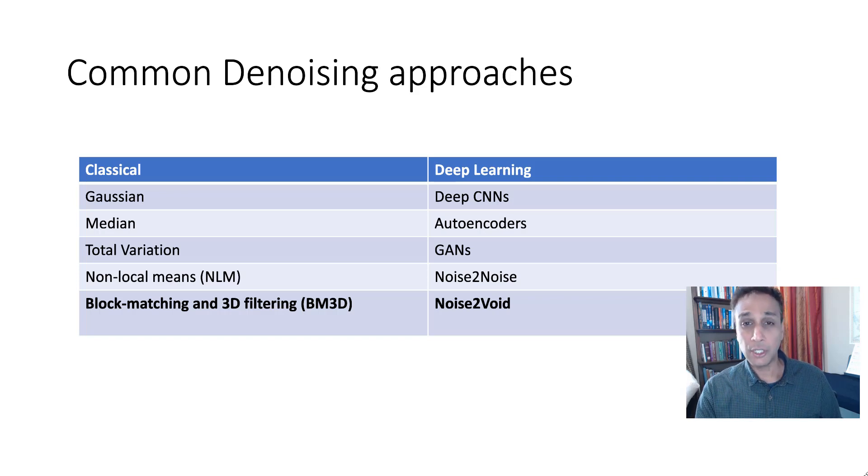And the common denoising approaches, as you probably know, there are classical ways and there are deep learning approaches. And the classical approaches, I covered videos on each of these topics, so I'm not going to spend a lot of time. I'll briefly explain what block matching 3D filtering is, although I did a dedicated video on this. Also, when it comes to deep learning, you can use deep CNNs, autoencoders, GANs, Noise2Noise. And the focus of this video, this tutorial is going to be on Noise2Void, and at least understanding that at a very high level.